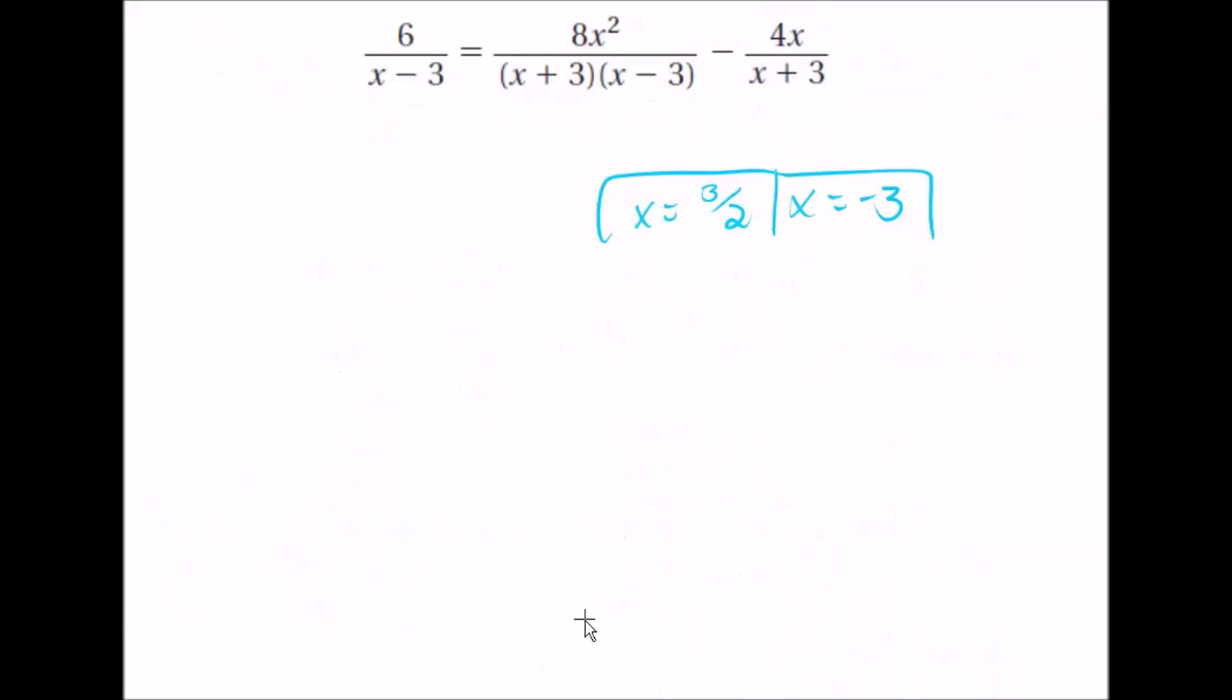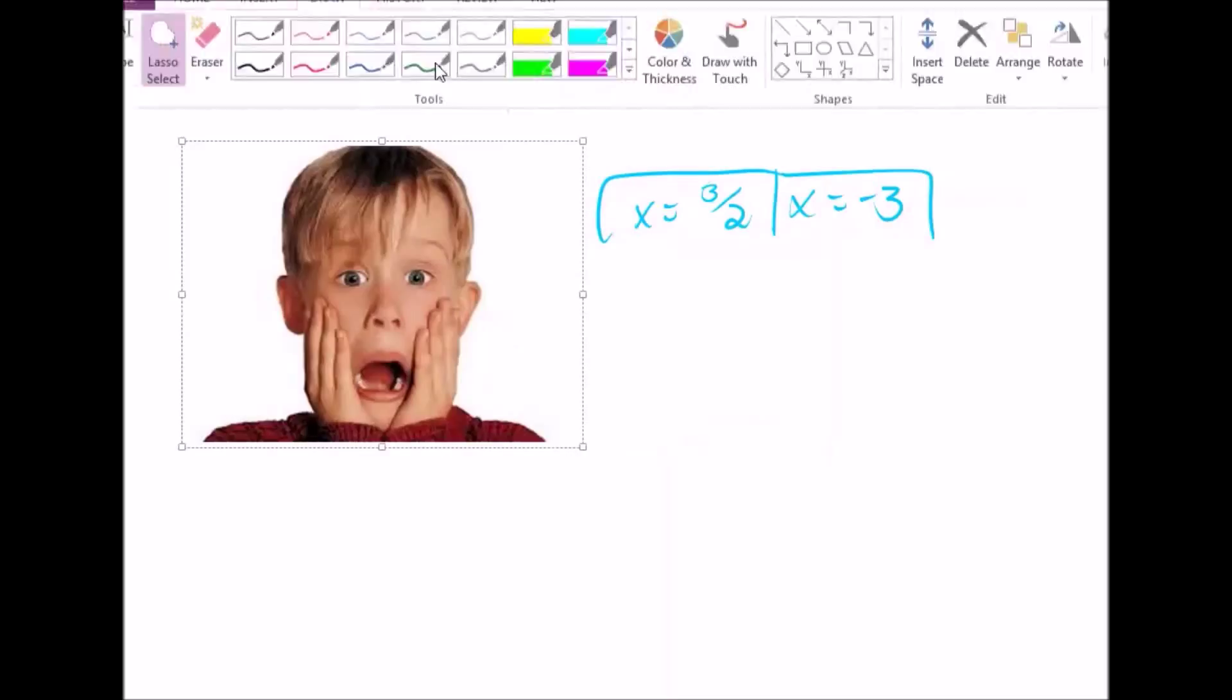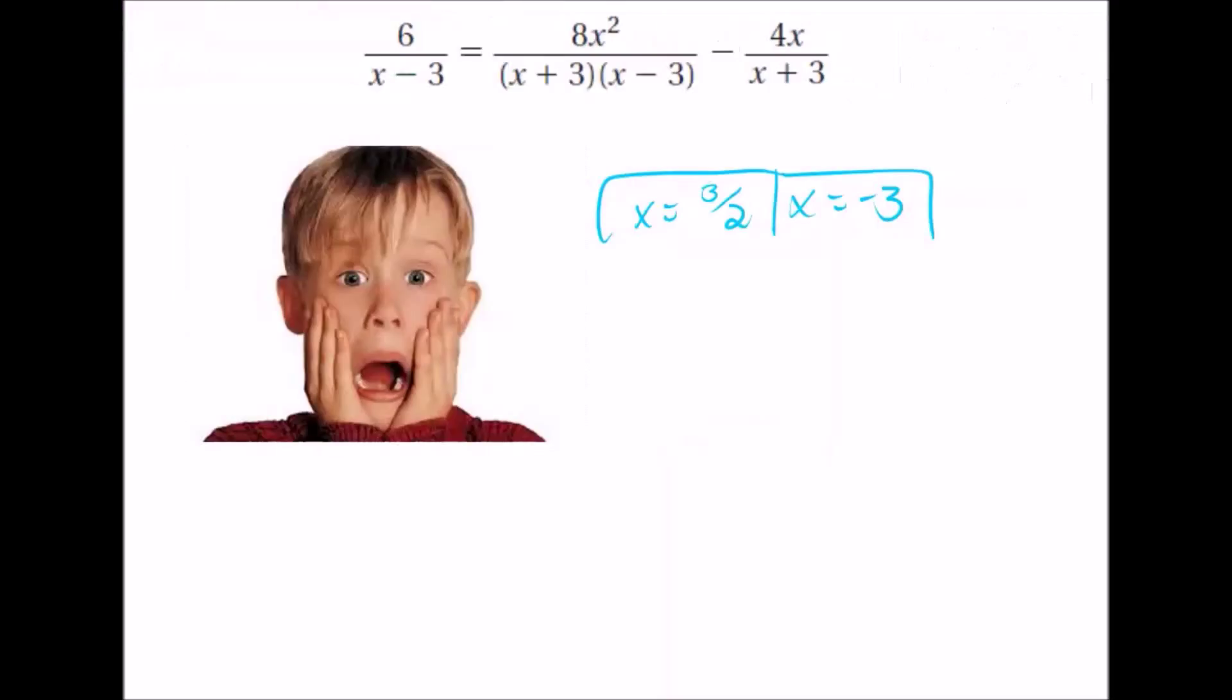So you found your two factors, you think you're done with the problem, and then you remember, oh no. Oh no! One of them might not actually be a real answer to this problem. So you have to check them to make sure they are. And like I said before, the easy way to do that is just plug those into the denominator and make sure none of the denominators become 0.